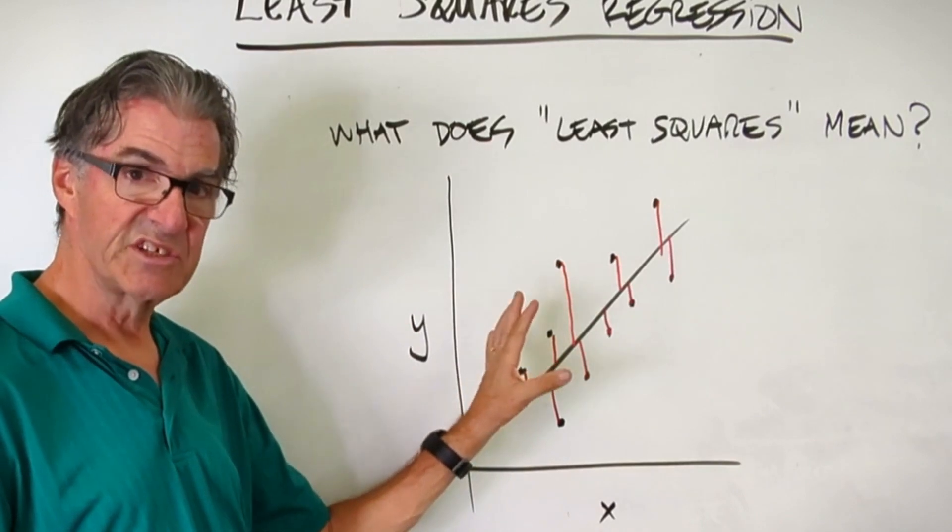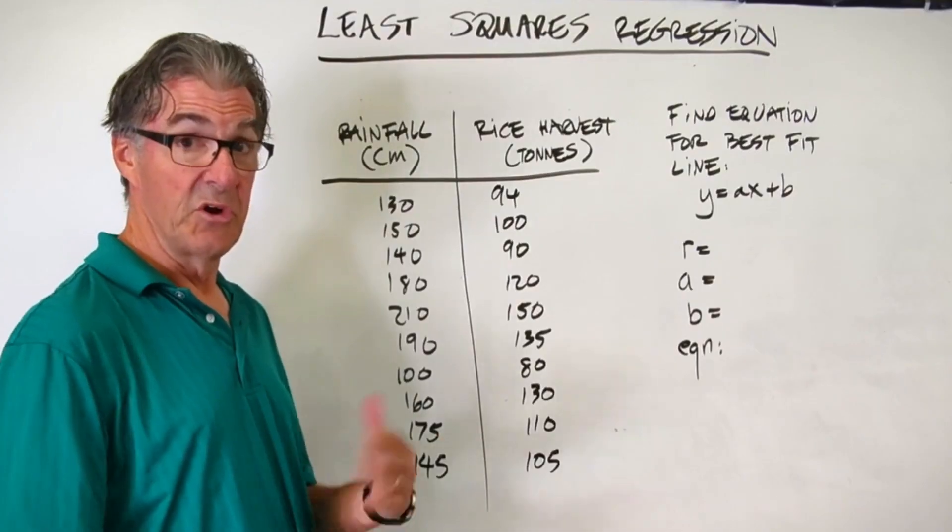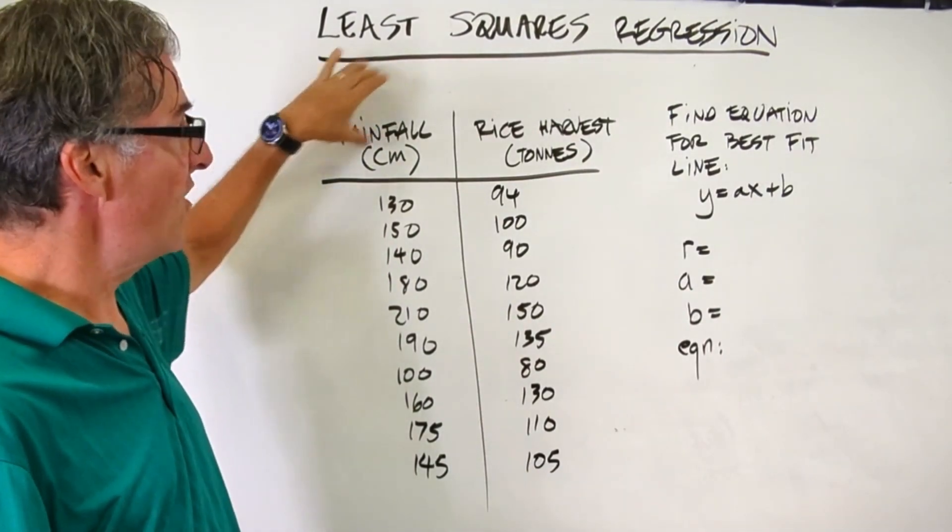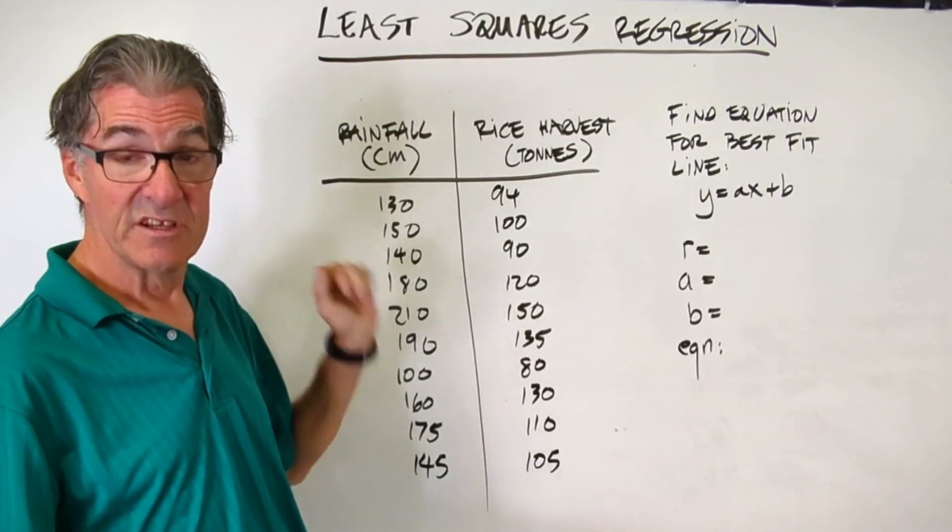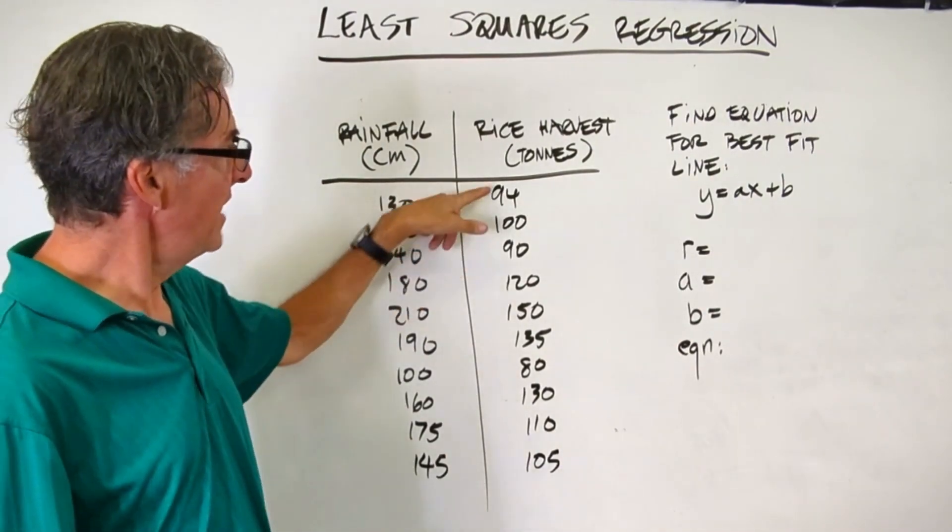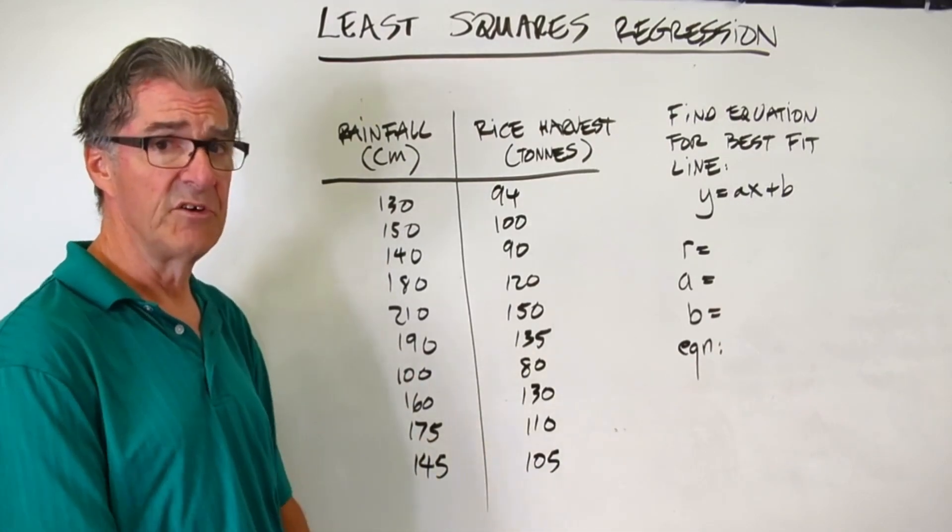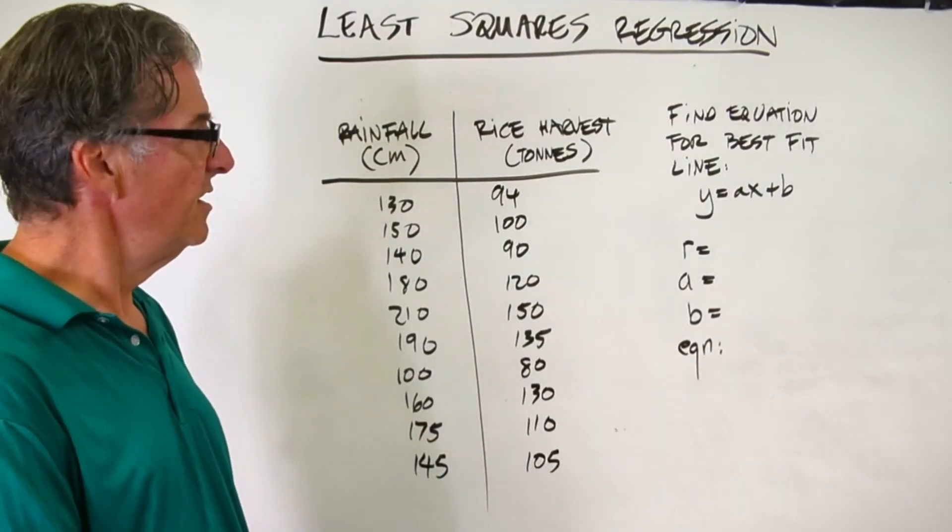Don't worry, you're not going to do this calculation, but that's what your calculator is doing for you. So here is another example comparing rainfall to a rice harvest, and here's your data with the rainfall figures in centimeters, and then the tons of rice harvested, maybe for a particular field or a rice farm.